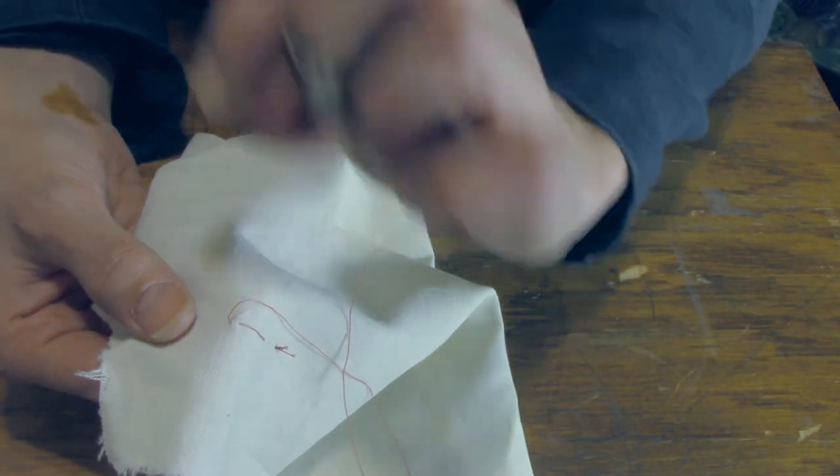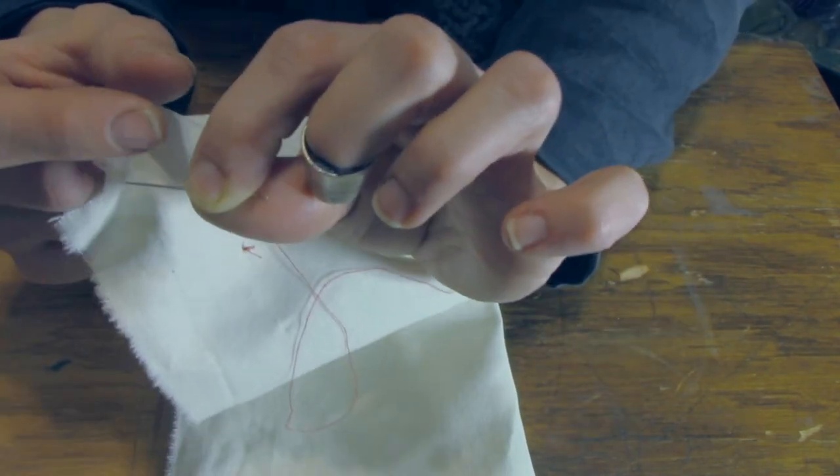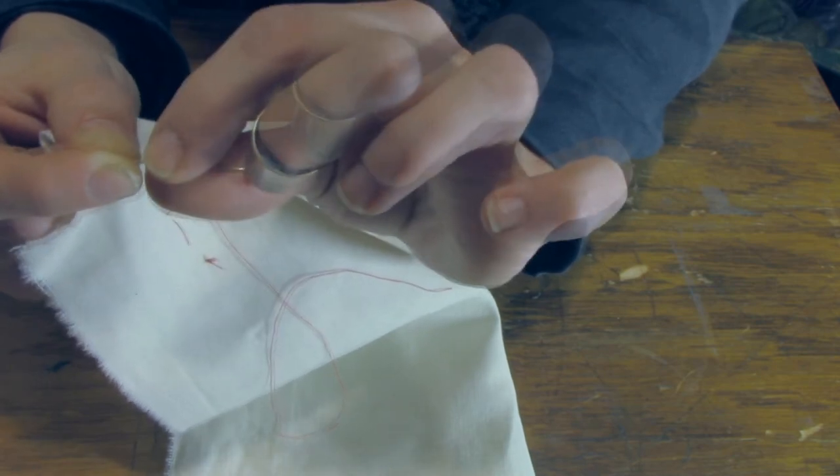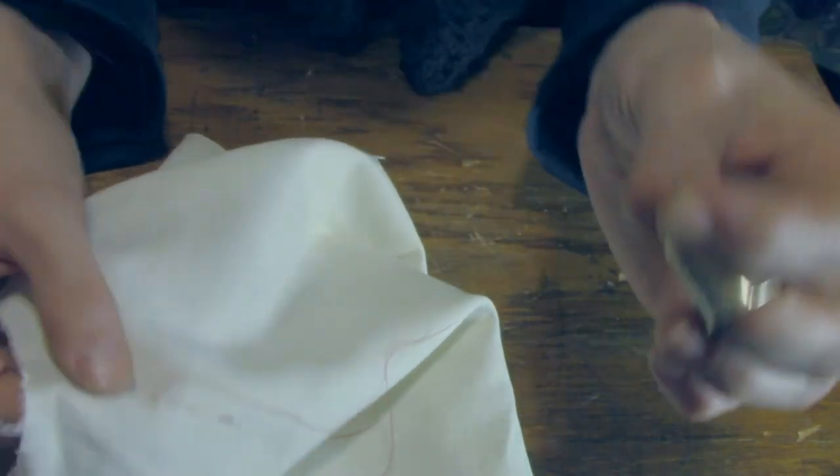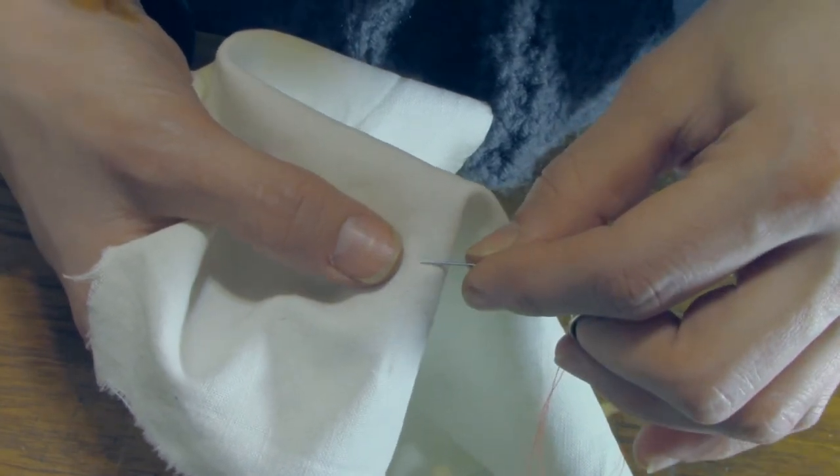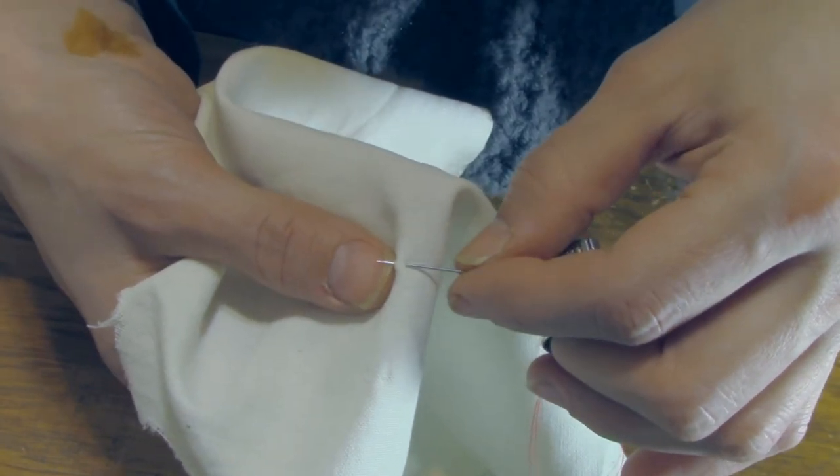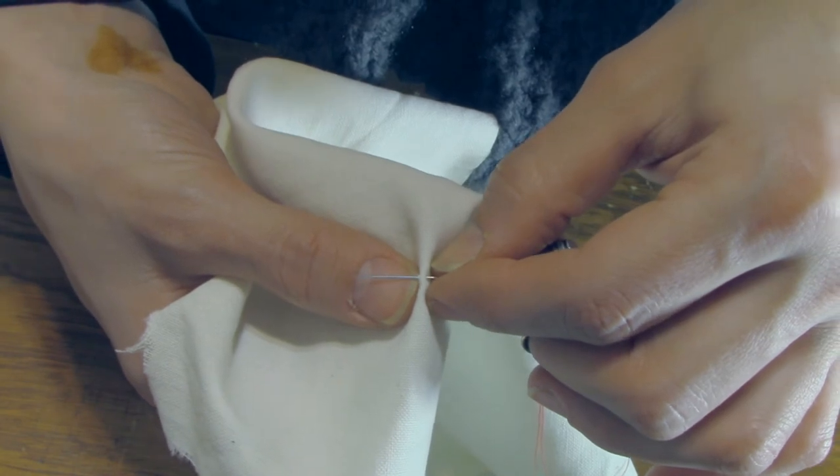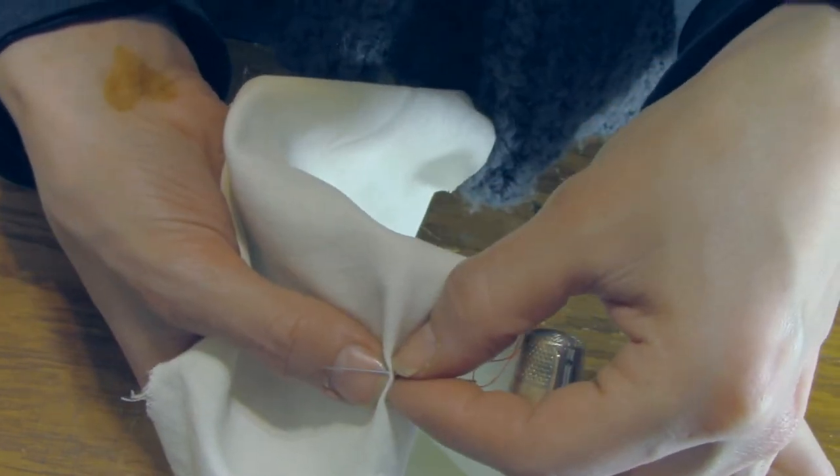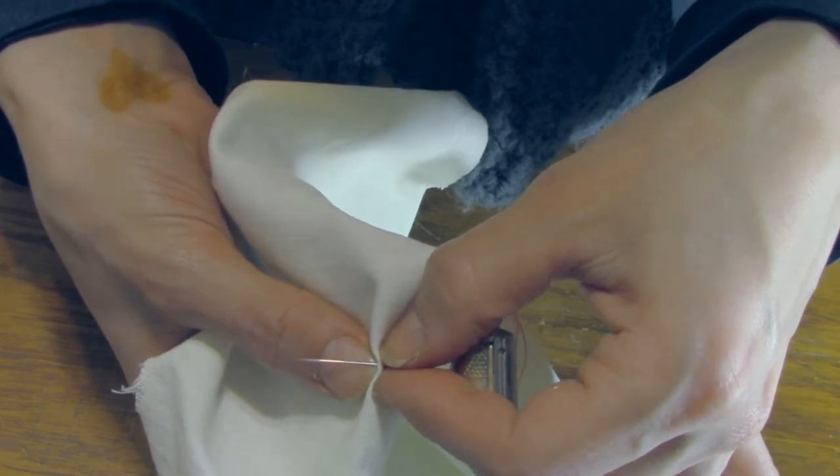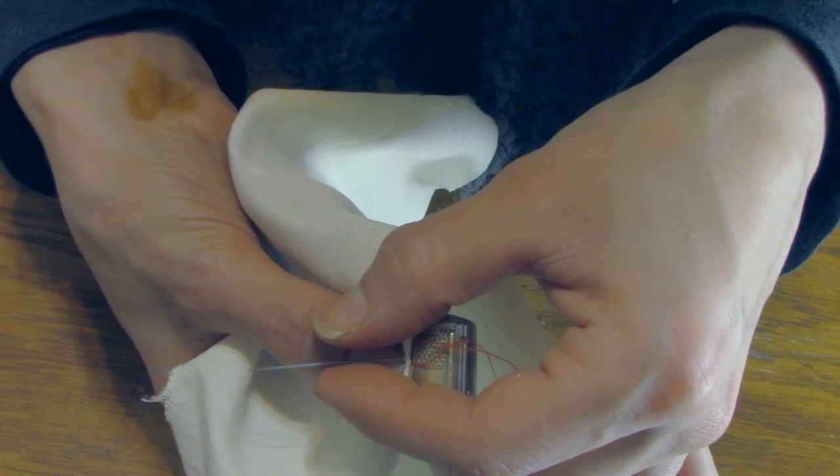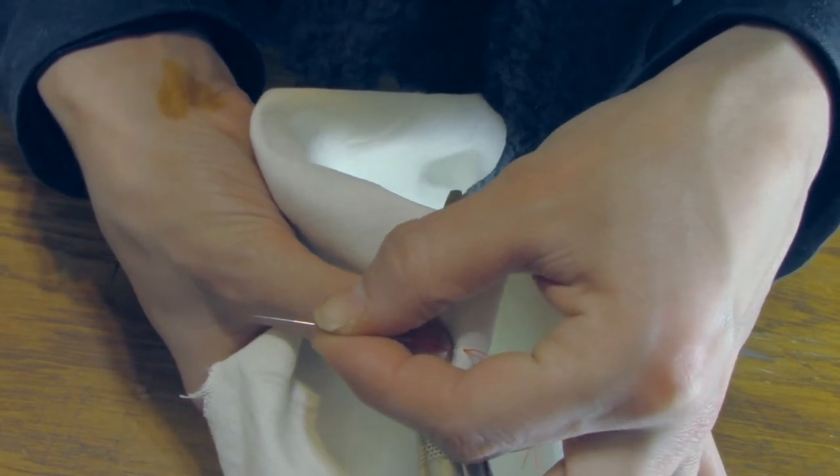And notice how now by maintaining that horizontal aspect in my needle, my middle finger is right here ready to grab it again. Through the fabric, out, thumb and index push, middle finger comes in, takes the movement, thumb and index grab it, pull out.